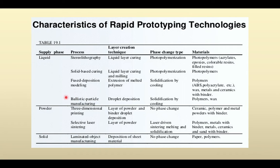Ballistic particle manufacturing: as the name suggests, the material is converted into small spherical droplets — like a drop of liquid forming a spherical shape. These droplets are propelled at high velocity and collapse together to form a layer. To achieve this layer formation, X, Y, and Z axis controls are needed. The X and Y axes are typically controlled by servo motors, while the Z direction (height) is adjusted by separate controls. Solidification is done by cooling only.